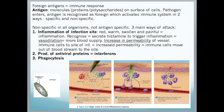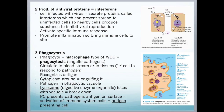If a cell is infected with a virus, it secretes proteins called interferons, which can prevent the spread to uninfected cells. Nearby cells produce a substance to inhibit viral reproduction, activating a specific immune response. The promotion of inflammation brings immune cells to the site. In this diagram, host cell 1 is infected with the virus; it makes interferons and releases them. The nearby cell recognises these interferons and turns on its genes for antiviral proteins.